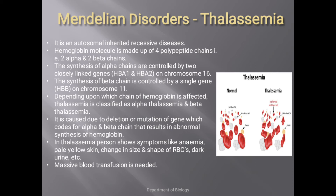The hemoglobin molecule is made up of four polypeptide chains — two alpha chains and two beta chains. The synthesis of alpha chains is controlled by two closely linked genes, HBA1 and HBA2, present on chromosome number 16. The synthesis of the beta chain is controlled by a single gene, HBB, present on chromosome number 11. Depending on which chain is affected, thalassemia is classified as alpha thalassemia or beta thalassemia.